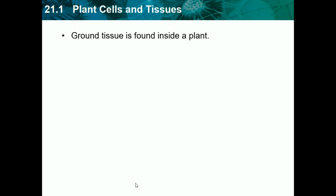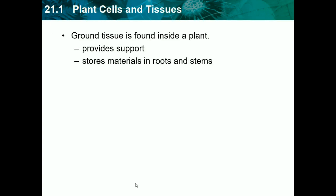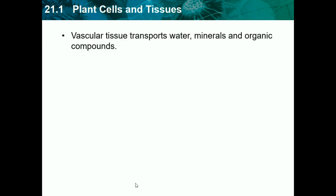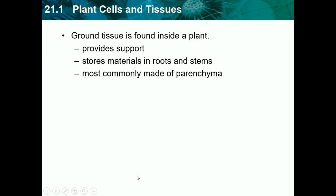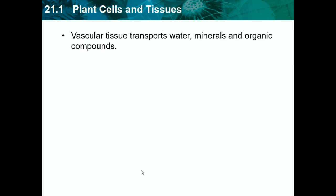We have ground tissue, which is found inside a plant, provides support, stores material in roots and stems, and is most commonly made of parenchyma. Ground tissue is the inside of the plant — basically the meat of the plant — where it stores everything. So think of it as the inside of the tree.